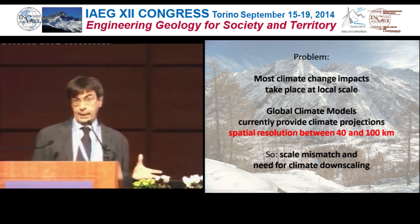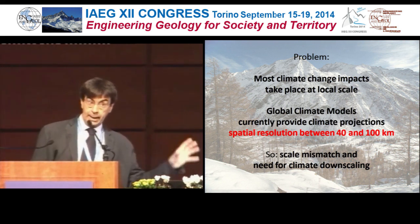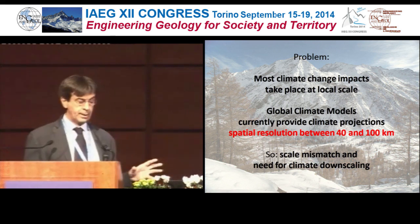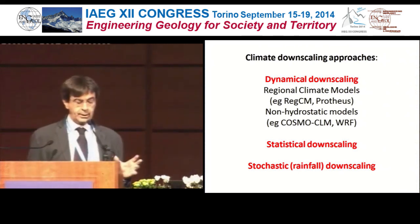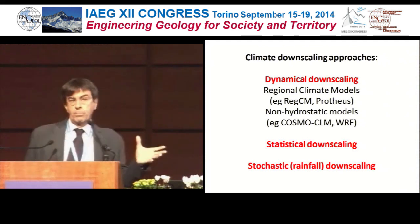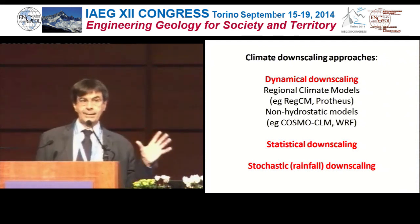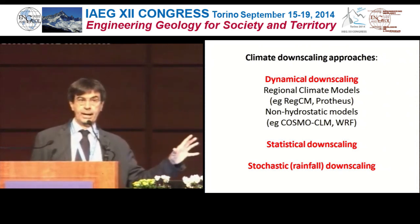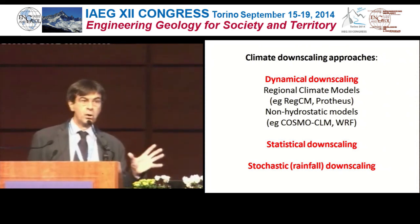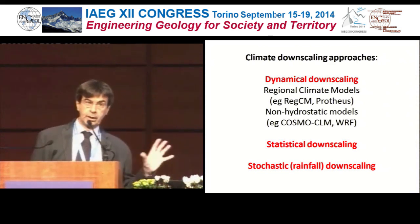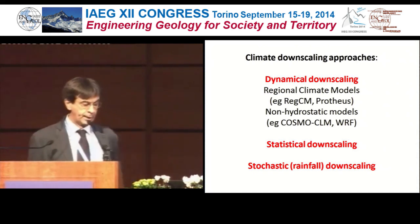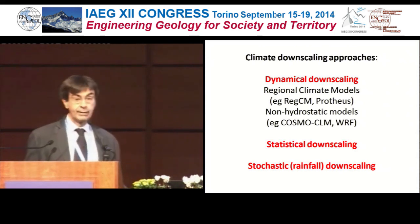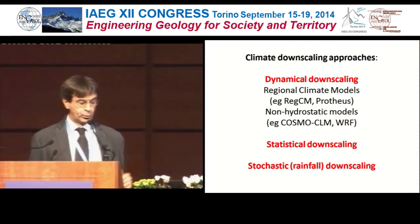We need climate downscaling, which is a bridge between the global climate models and the impact models. There are various approaches for this. The most common right now is dynamical downscaling, where you nest a regional climate model into the global climate model and reach a resolution from 40 to 4 kilometres. There are also statistical downscaling and stochastic rainfall downscaling approaches.